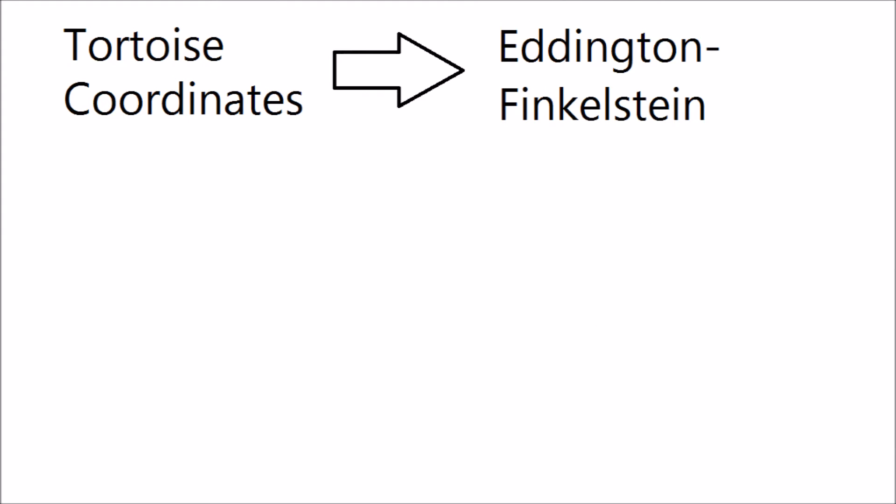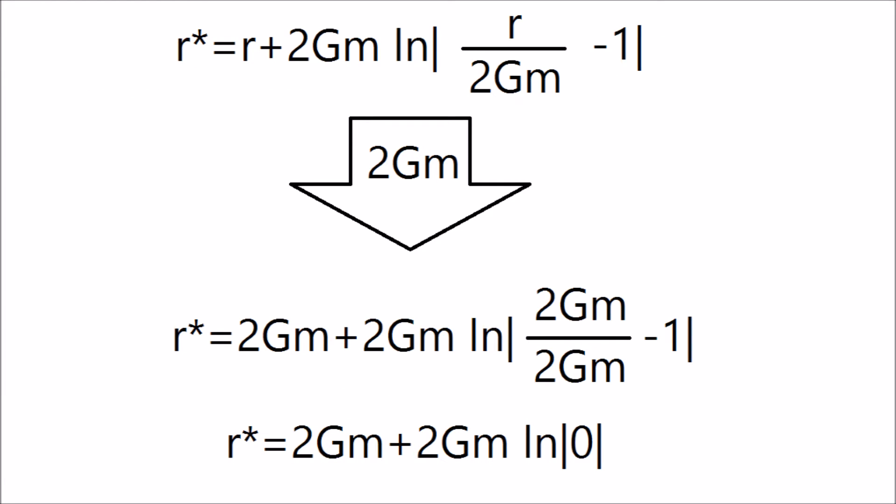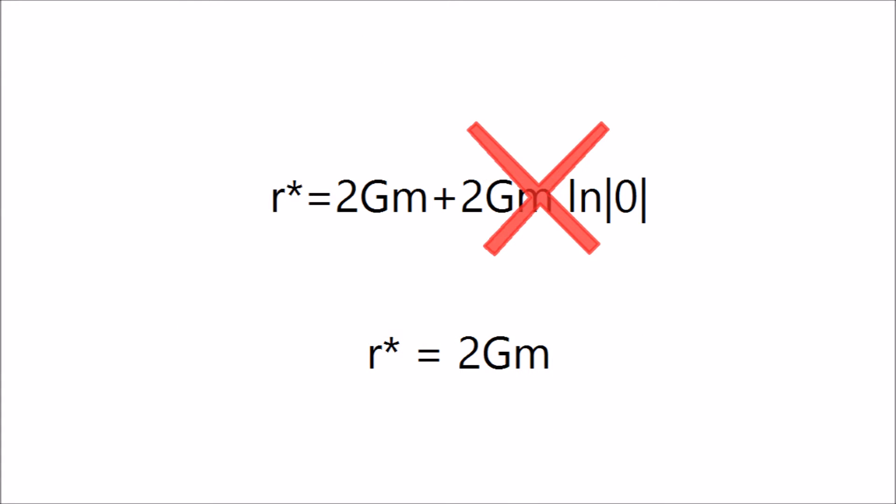The coordinate singularity remains because the EF is still based upon the tortoise coordinates. For those coordinates is a term which has a value of 2GM times the natural log of 0 at the event horizon, which again is the 2GM coordinate singularity. The term natural log of 0 is undefined, therefore it must be discarded in the best case scenario or corrupt the equation in worst.